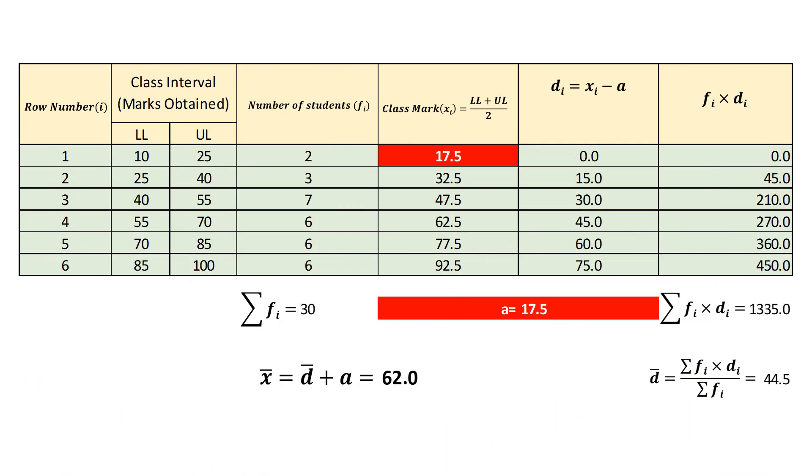While using assumed mean method, we select any value from class mark and call it as assumed mean. In this process, we define new quantity called d sub i equals x sub i minus a. Here, i represents row number of class intervals. Now, we calculate d1, d2, d3, d4, d5 and d6 based on the definition.